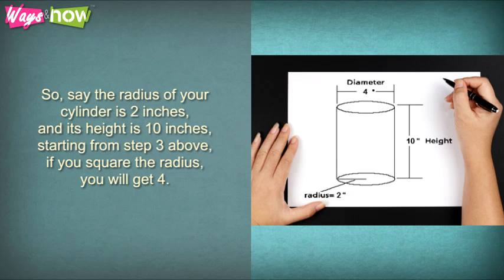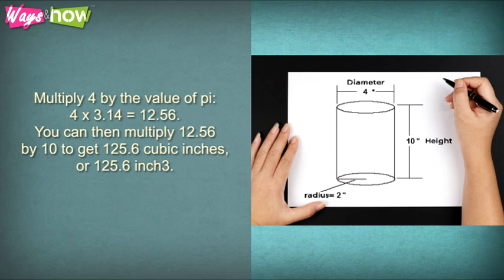So, say the radius of your cylinder is 2 inches, and its height is 10 inches. Starting from step 3 above, if you square the radius, you will get 4. Multiply 4 by the value of pi. 4 times 3.14, which equals 12.56. You can then multiply 12.56 by 10 to get 125.6 cubic inches, or 125.6 inch cube.